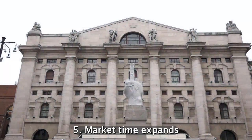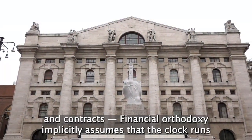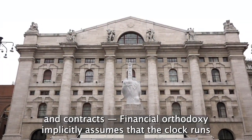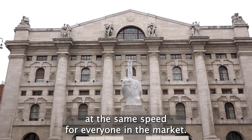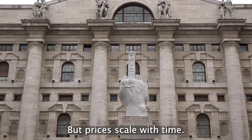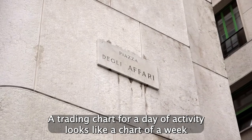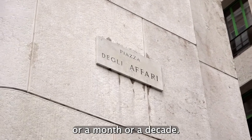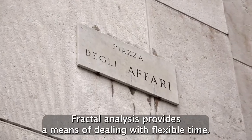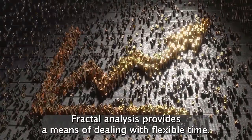Five: Market time expands and contracts. Financial orthodoxy implicitly assumes that the clock runs at the same speed for everyone in the market. But prices scale with time. A trading chart for a day of activity looks like a chart of a week or a month or a decade. Fractal analysis provides a means of dealing with flexible time.